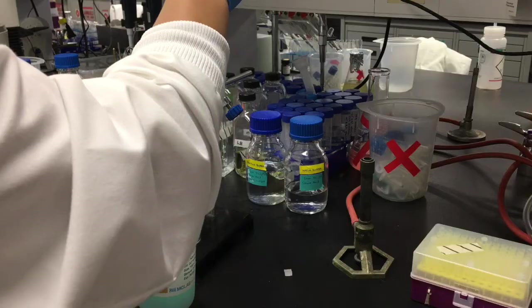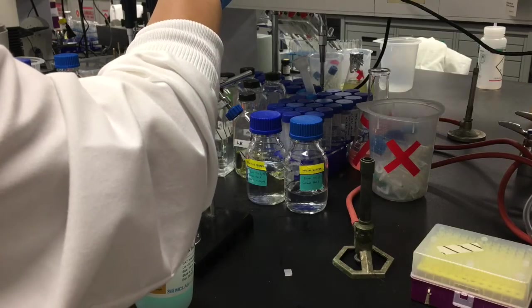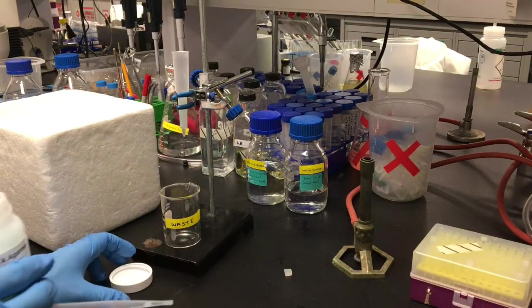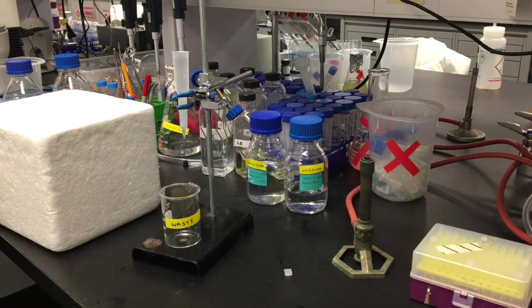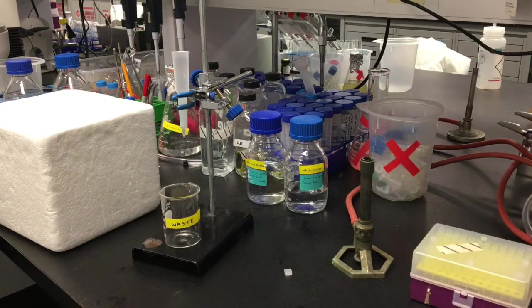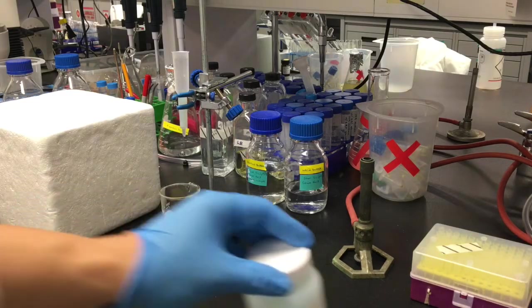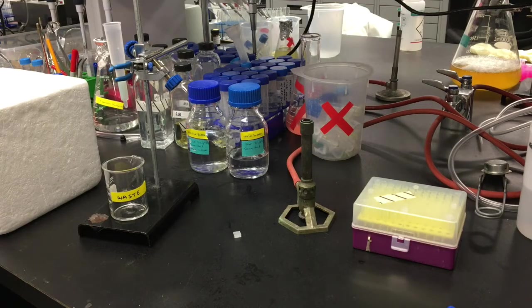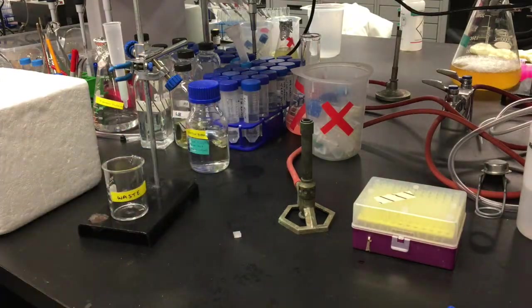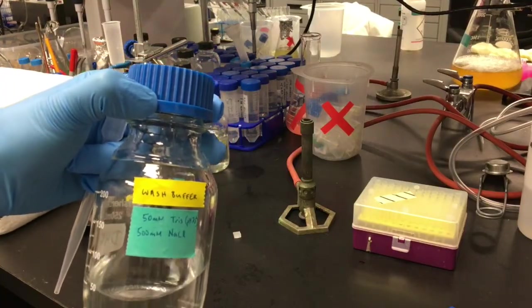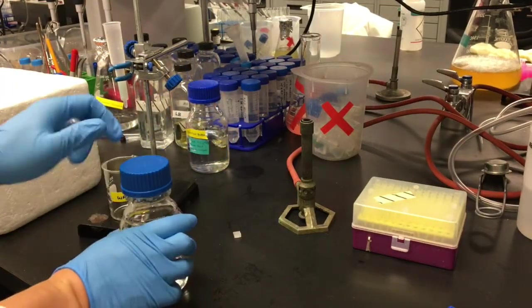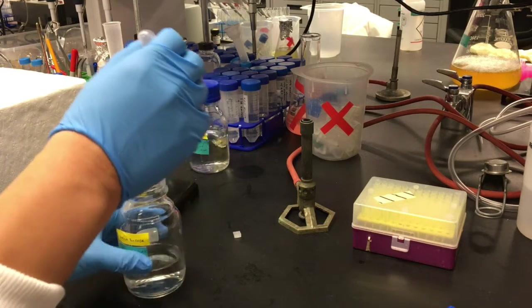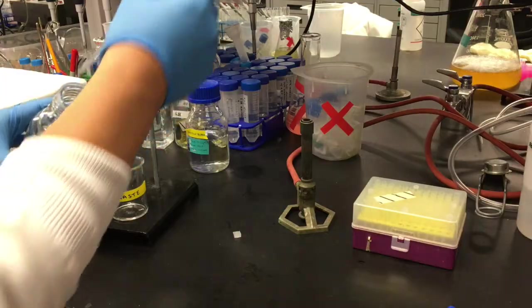The first thing we need to do for nickel affinity chromatography by gravity column is to pack a column. Taking a 50% slurry of nickel NTA agarose, I'm taking 2 milliliters of suspension and adding it to the column. As the liquid drips out the bottom, it leaves a 1 milliliter bed of resin. Then, I need to equilibrate the resin, which had been stored in 20% ethanol, with my wash buffer. I add 2 to 5 milliliters of wash buffer and let it drip through.